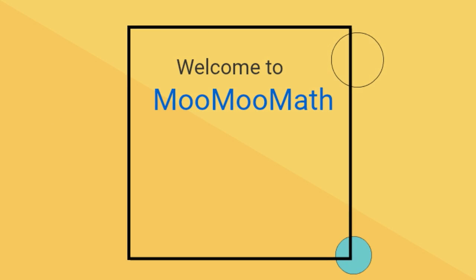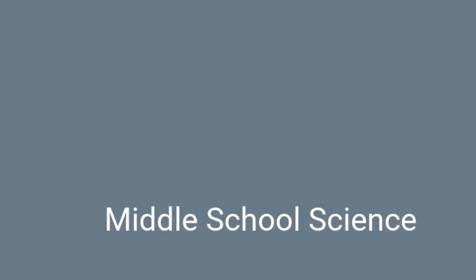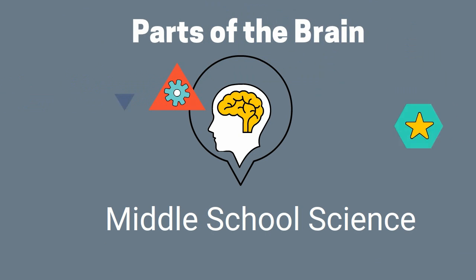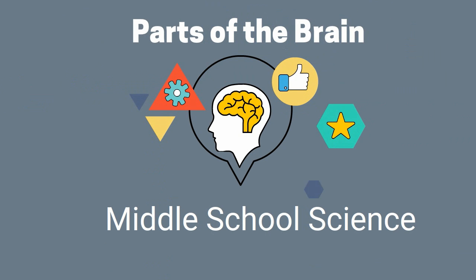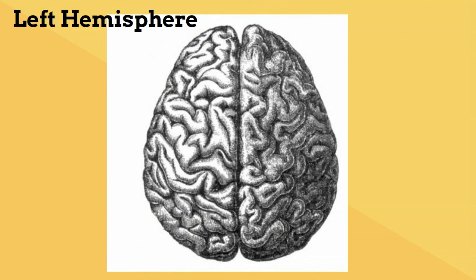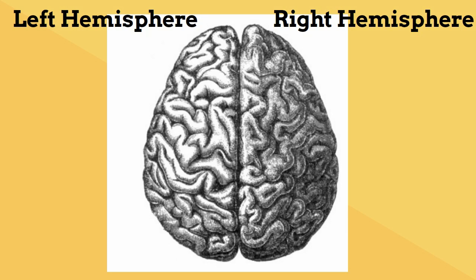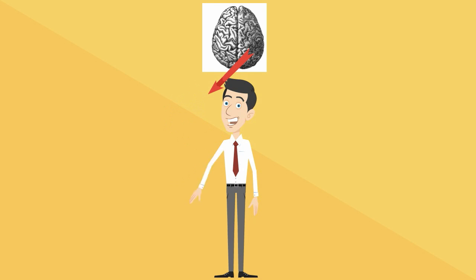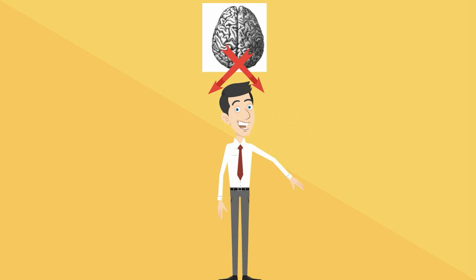Welcome to MooMooMath and the Parts of the Brain. The brain has two main hemispheres: the left hemisphere and the right hemisphere. The left side of your brain controls movements on the right side of your body, and the right side controls movements on the left side of your body.